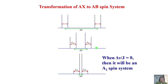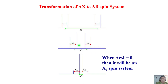You can see the smooth transition from AX to AB to A2. Importantly, the separation between any two outer lines always gives you the J coupling, regardless of the strength of coupling — whether weakly or strongly coupled, it doesn't matter. J coupling is easy to extract, but the chemical shift cannot be obtained individually in strongly coupled systems; you can only get the difference.